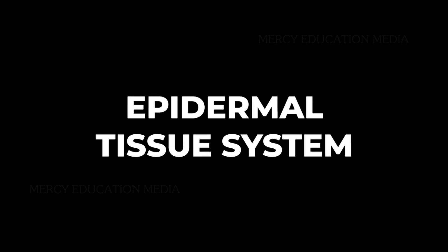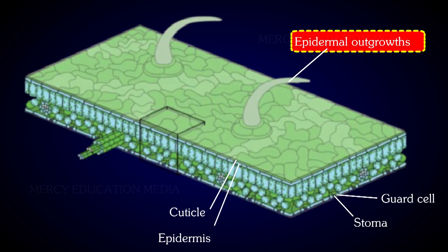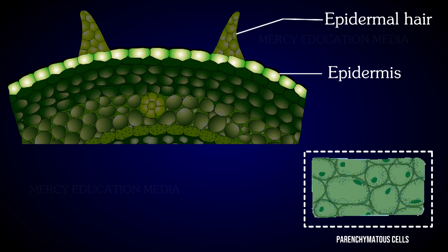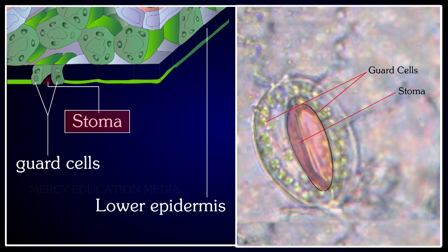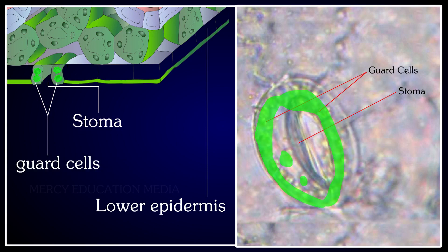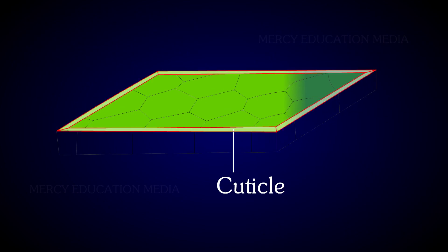The epidermal tissue system is the outermost covering of plants. It consists of epidermis, stomata, and epidermal outgrowths. Epidermis is generally composed of a single layer of parenchymatous cells compactly arranged without intercellular spaces, but it is interrupted by stomata. In leaves, some specialized cells which surround the stomata are called guard cells. Chloroplasts are present only in the guard cells of the epidermis; other epidermal cells usually do not have chloroplasts.